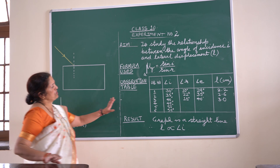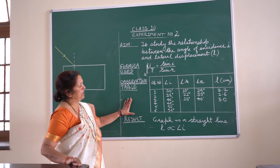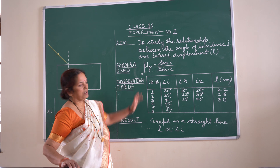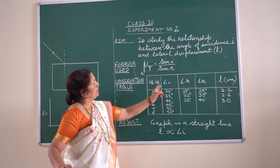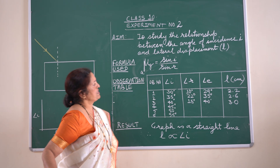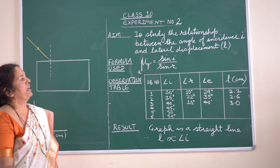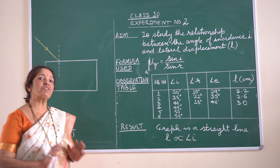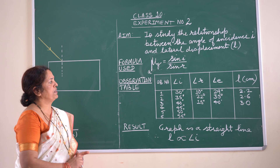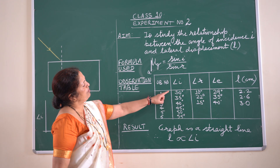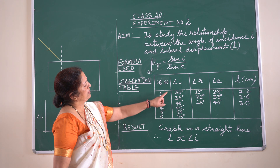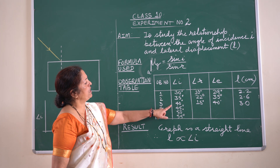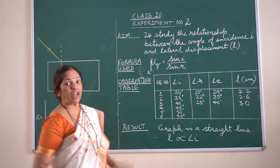The observation table has columns for: observation number, angle of incidence, angle of refraction, angle of emergence, and lateral displacement. The angles to be used are 30°, 35°, 40°, 45°, 50°, and 55°.